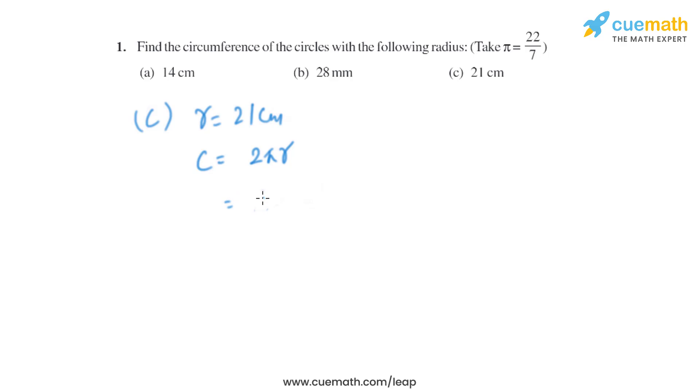centimeter. The formula to find the circumference of the circle is 2πr, so it will be 2 × 22/7 × 21 centimeter. After solving it, we will get 132 centimeter. So that will be the circumference of the circle when the radius is 21 centimeter.